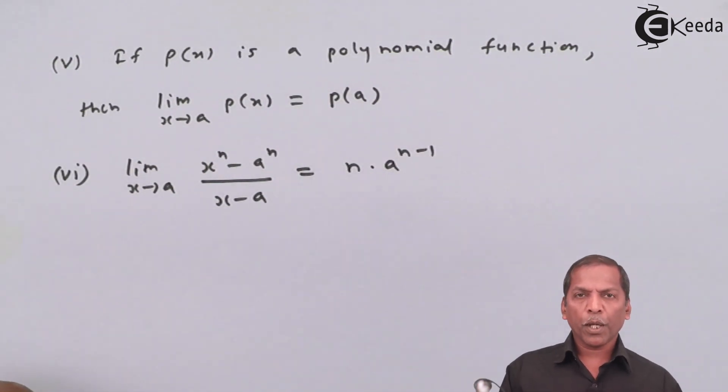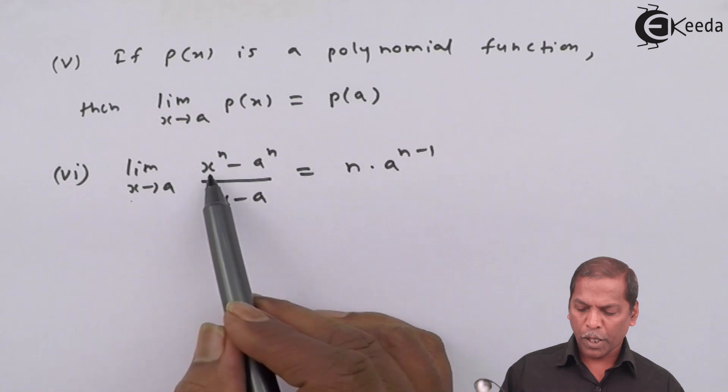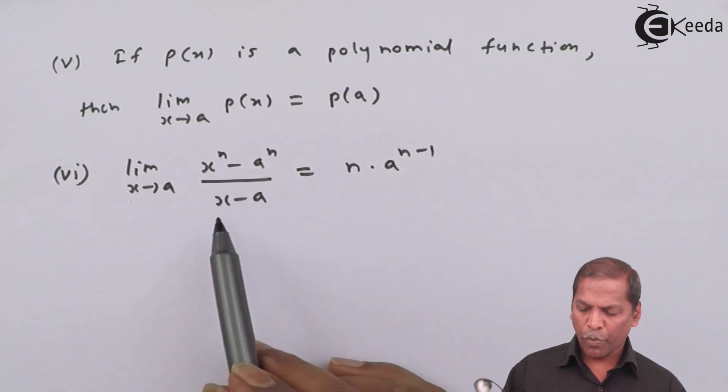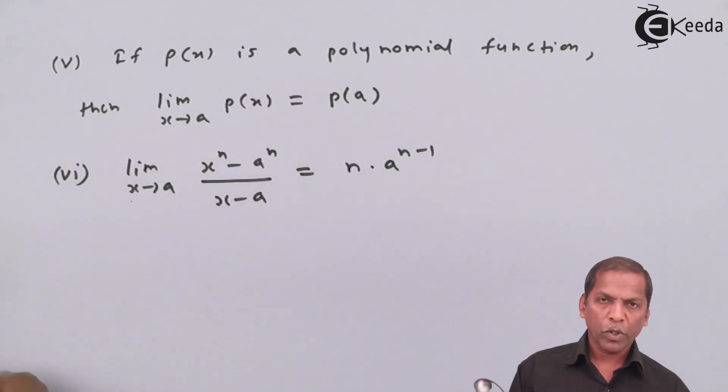Now here, formula number six states that limit x approaches a of (x raise n minus a raise n) upon (x minus a) equals n times a raise (n minus one). This formula is very important for solving problems based on limits.